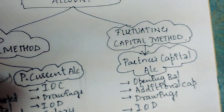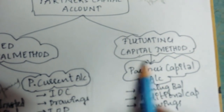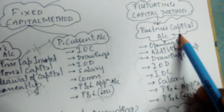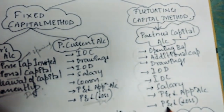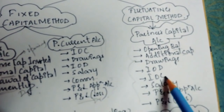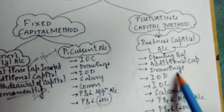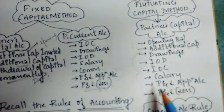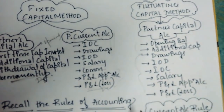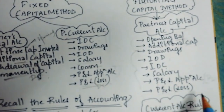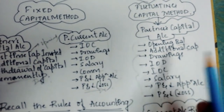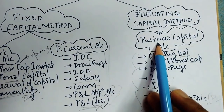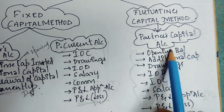Coming to the fluctuating capital method: only one partner's capital account is prepared. All items are recorded in it — opening balance, additional capital, drawings, interest on drawings, interest on capital, salary, P&L appropriation account profit share, and P&L loss. All transactions are recorded in this single account, which is called the partner's capital account.